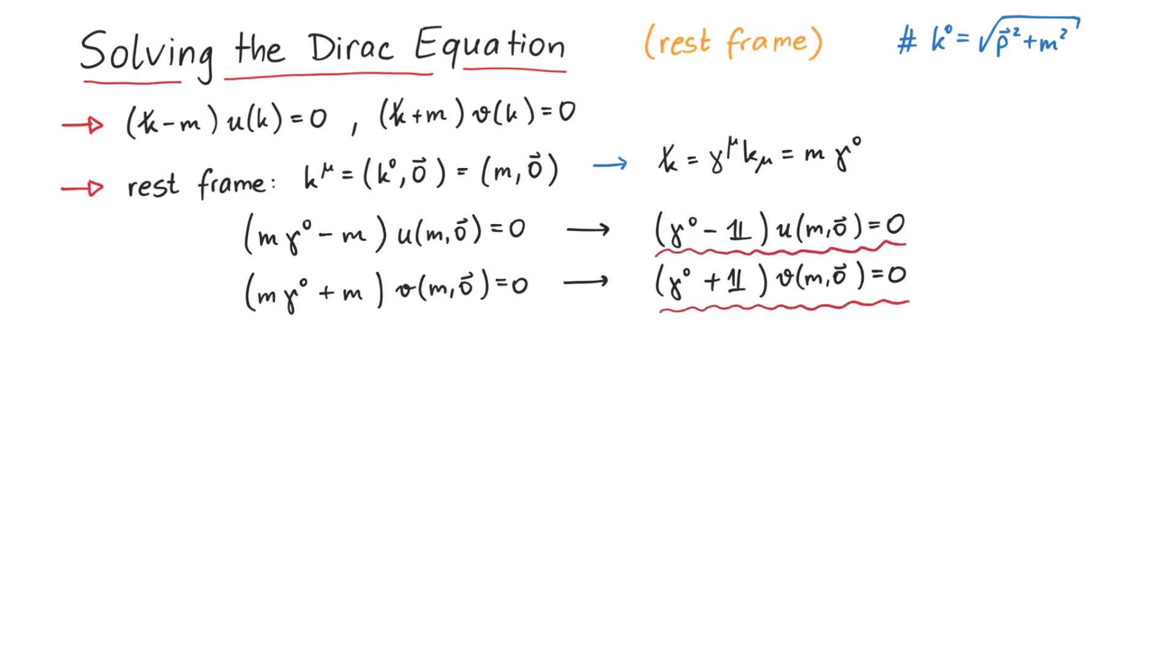In order to continue, we write u explicitly using its four components. But what about gamma 0? The gamma matrices come in many different representations, so depending on which representation of gamma 0 we choose, we'll get a different expression for u and v.